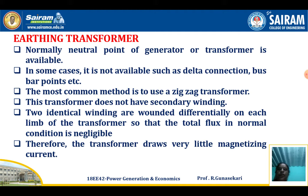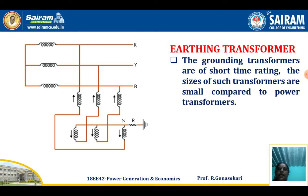This zigzag transformer does not have a secondary winding. Two identical winding transformers are wound differentially on each limb of the transformer, so that the total flux in normal condition is negligible. Therefore the transformer draws very little magnetizing current. Now you see the diagram of the earthing transformer.